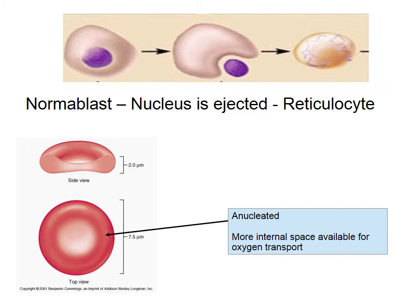The late erythroblast develops into a normoblast. At this point, the nucleus of the cell is expelled and it becomes a reticulocyte. The loss of the nucleus means that the cell is now indented, resulting in its biconcave shape. This means it has more space available for oxygen transport.